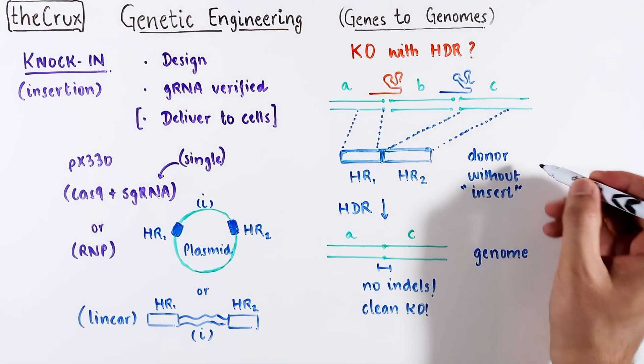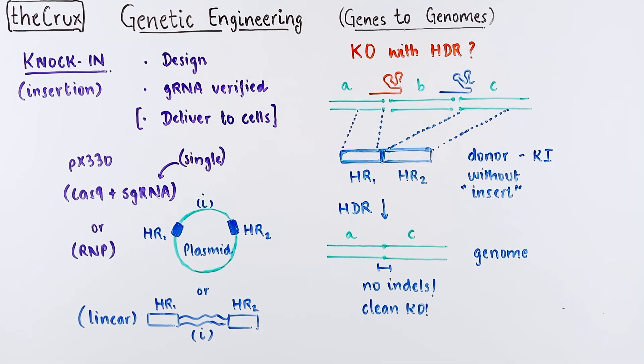Typically, only knock-ins use donor. It is super rare to find a use case for clean KO. Given this sort of knockout strategy, how do you think the donor DNA will change, based on our discussion on knock-in donors?